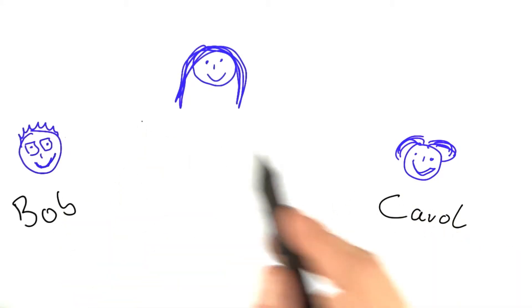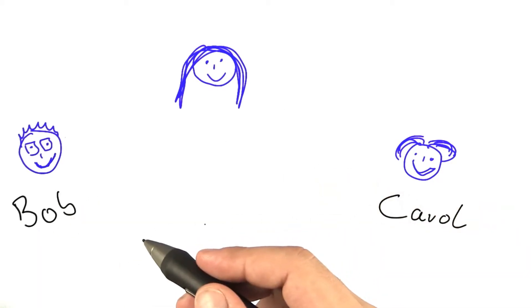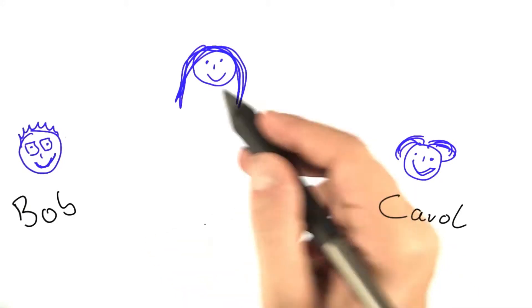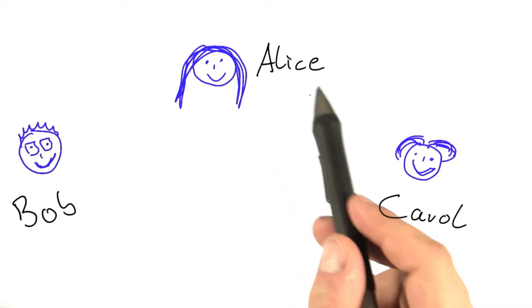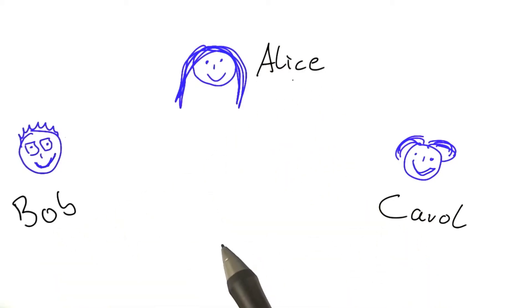Alice also arrives to the meeting, and Alice is very excited to hear about the discovery that Bob and Carol have made. Alice is hoping that maybe she can also find a connection of her problem to Bob and Carol's problem, or at least that they can help her find a good algorithm for her problem by brainstorming.